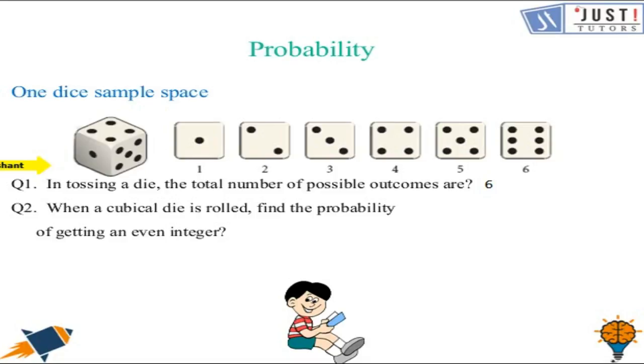When a cubical die is rolled, find the probability of getting an even integer. Even integer - even numbers. But this die has only positive numbers, so we can see even numbers: 2, 4 and 6. Three even numbers which will be successful trials - 3. And the total number of trials, total number of outcomes is 6. Even integer 3 over 6, which we can simplify to 1 over 2.